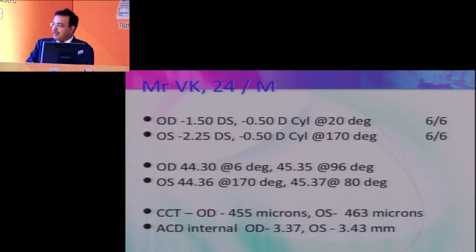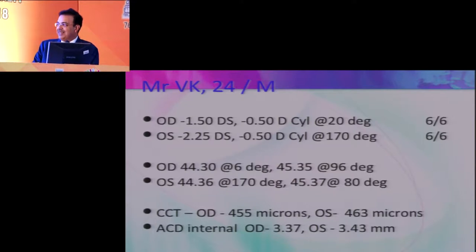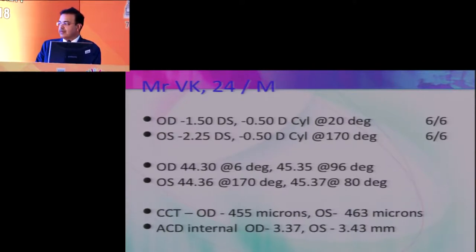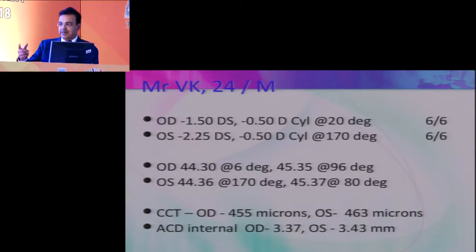Discussion among the panel: would anyone do something different? One speaker suggested smile extra because the refractive error is very small at minus 1.5 — with a 120-micron cap thickness, you would still have a residual bed of 300. The majority felt PRK is biomechanically a little more stable than SMILE. The take-home message: your first instinct should perhaps be to decline surgery and keep the patient on follow-up. Personally, he would put the patient on follow-up for at least one or two years with pentacams, refractions, and corneal thickness monitoring before deciding to treat — on first instance, probably not, but would be okay doing surface treatment subsequently.